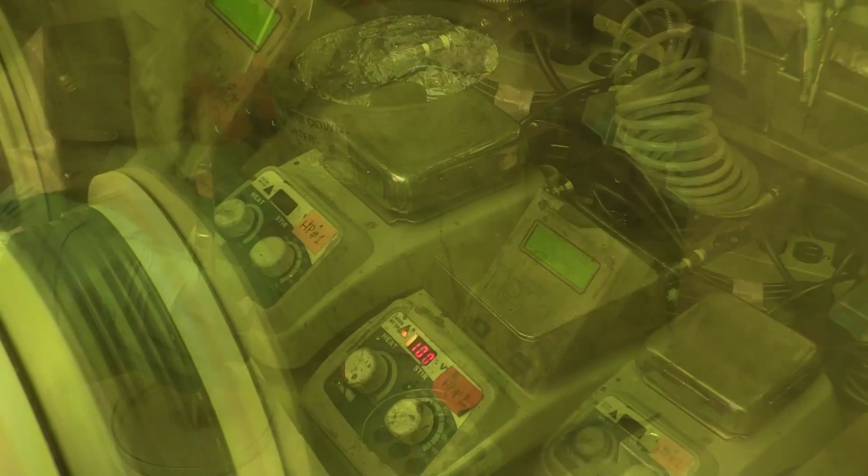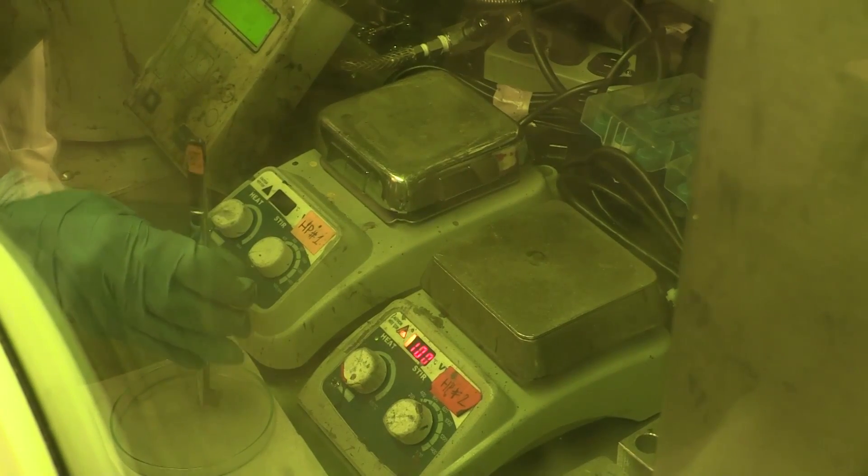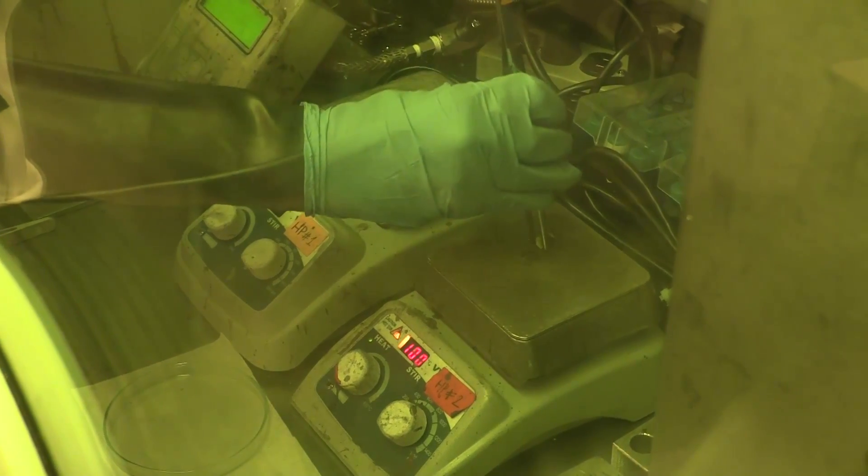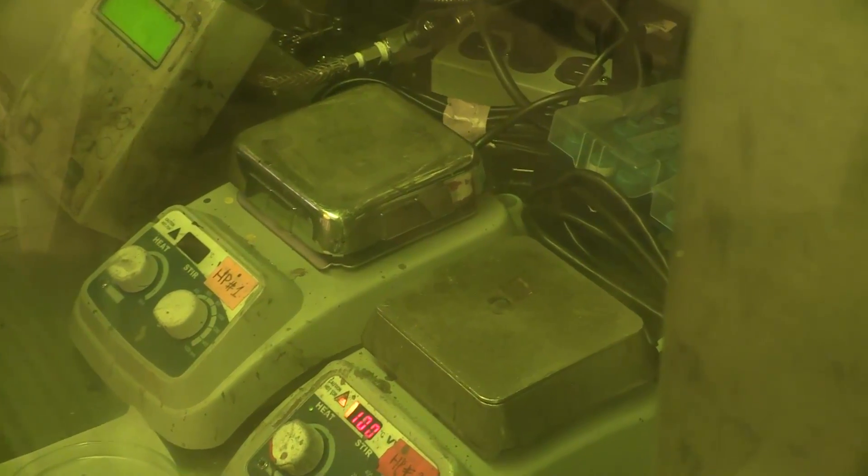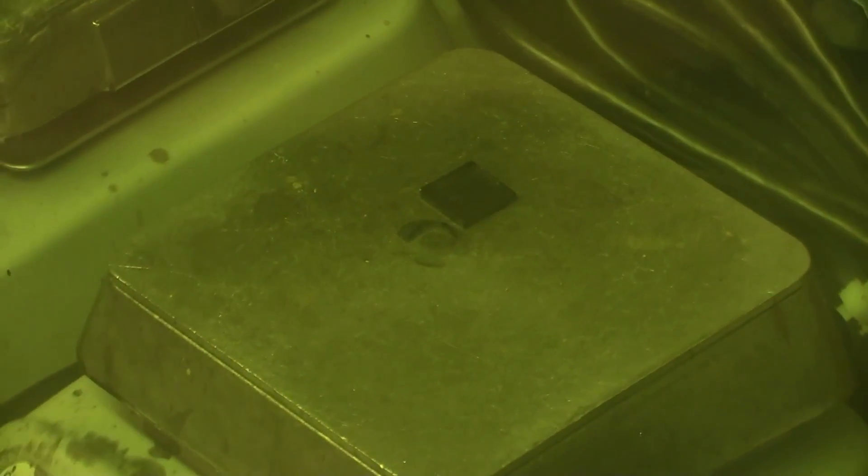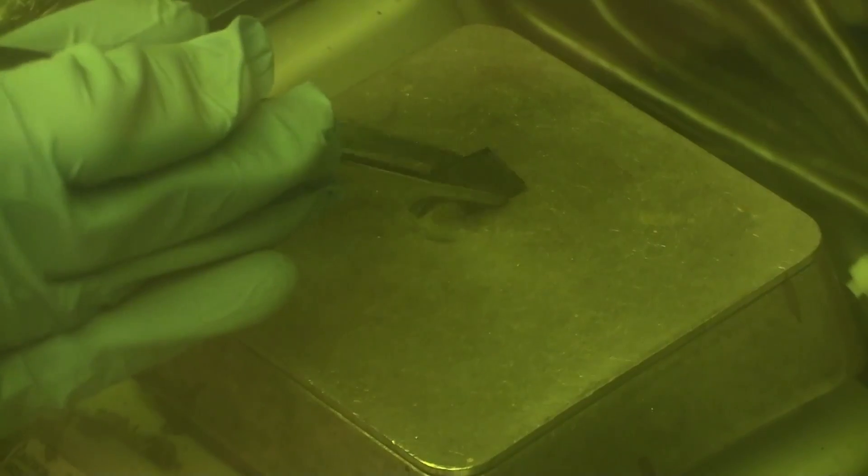Then we anneal the film on a hotplate at 100 degrees Celsius for 5 minutes to fully form the perovskite. As the perovskite forms, the film will start to turn black. After 5 minutes of annealing, the perovskite has fully formed and we remove it from the hotplate.